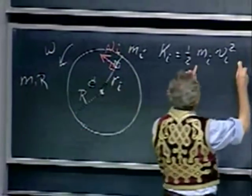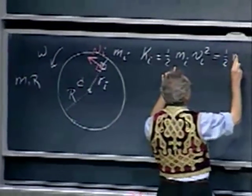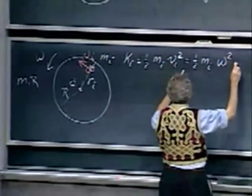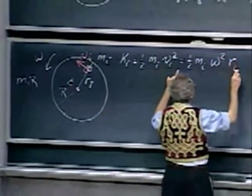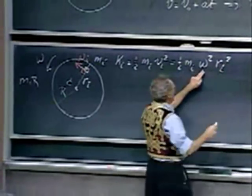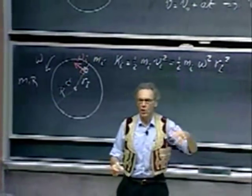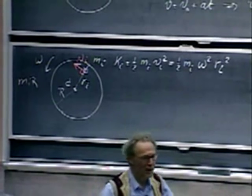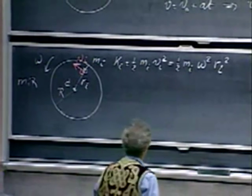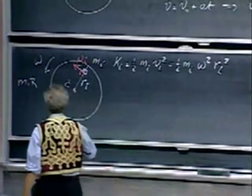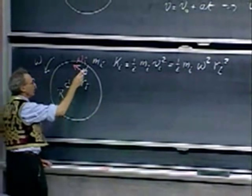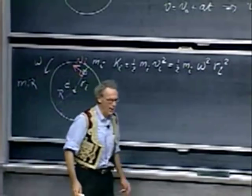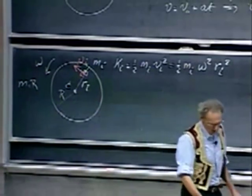So I prefer to write this as ½mᵢ·omega²·rᵢ². The nice thing about writing it this way is that omega, the angular velocity, is the same for all points of the disk, whereas the velocity is not—a point close to the center moves slowly, while one at the rim moves fast. Going to omega eliminates that problem.